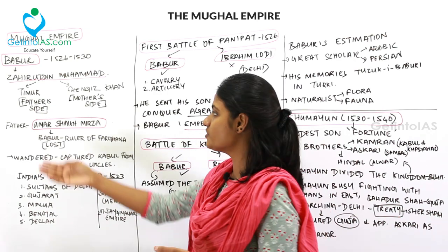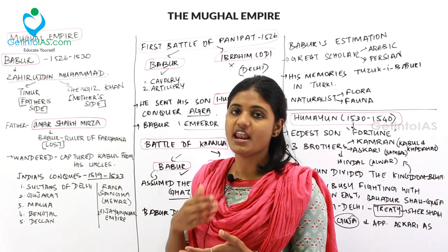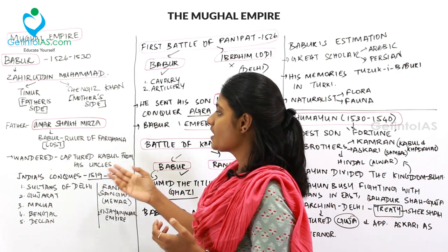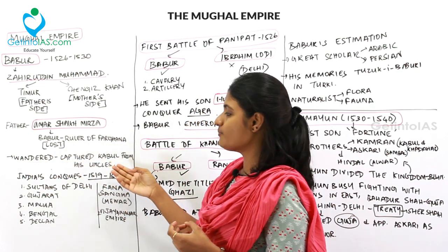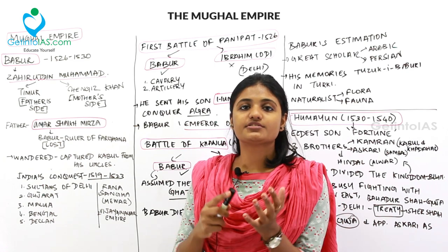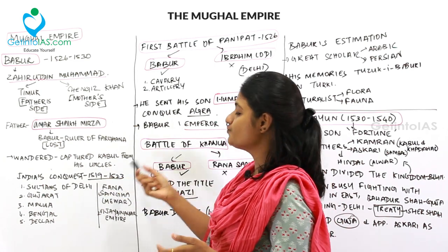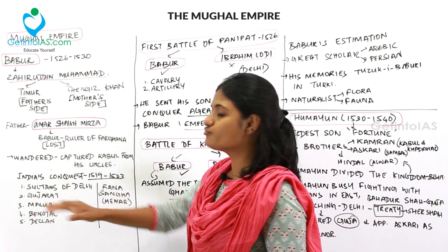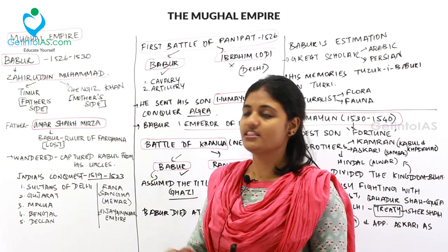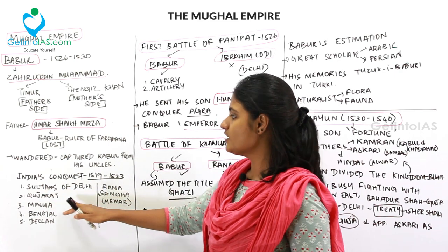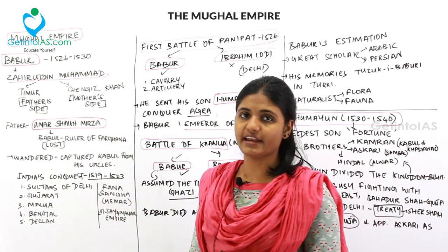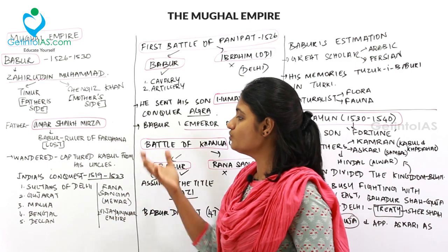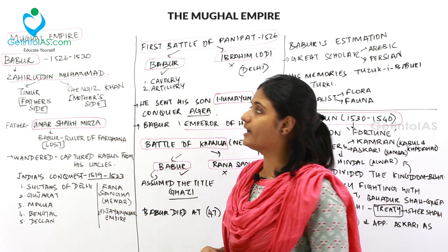Babur's early conquests of India from 1519 to 1523 were all failures. During his conquest attempts, there were five Muslim rulers in India — the Sultans of Delhi, Gujarat, Malwa, Bengal, and Deccan — and two Hindu rulers: Rana Sangha of Mewar and the Vijayanagara Empire. He had to defeat all these powers to enter India.